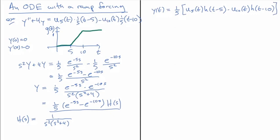Now we just have to calculate what h(t) is — I encourage you to go through calculating it yourself. That gives us h(t) equals (1/4)t minus (1/8) sine of 2t. And that is another example of how to solve ODEs that have piecewise — in this case piecewise linear — right-hand sides, using shifted function transforms and inverse transforms.